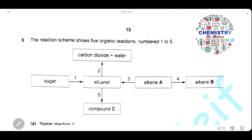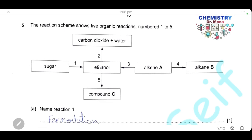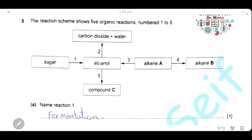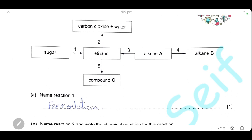Question 5. The reaction scheme shows five organic reactions. Reaction 1: sugar converts to ethanol. Reaction 2: ethanol converts into carbon dioxide and water. Reaction 3: alkene A converts into ethanol. Reaction 4: alkene A converts into alkane B. Reaction 5: ethanol converts to unknown compound C. Name reaction 1: sugar converts into ethanol using yeast — this is fermentation.